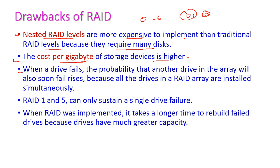Whenever a drive fails, the probability that another drive in the array will also fail is high, because all drives are installed simultaneously. If one drive fails, we need to immediately replace the failed device; otherwise all other drives may also fail.